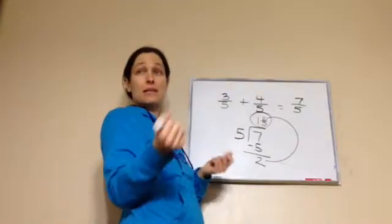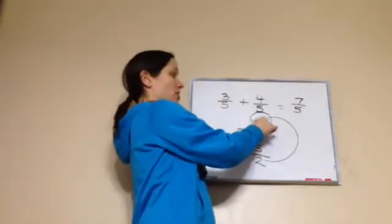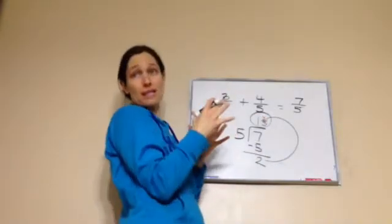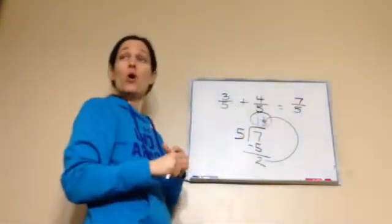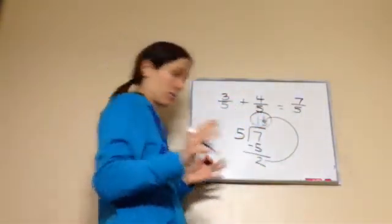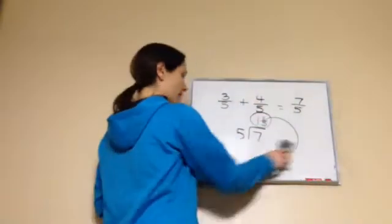One and two fifths. And that's a mixed number. Why is it a mixed number? Because I have a fraction and a whole number. So it makes it mixed. So improper fractions can always be changed into a mixed number. All right. Let's try one more.